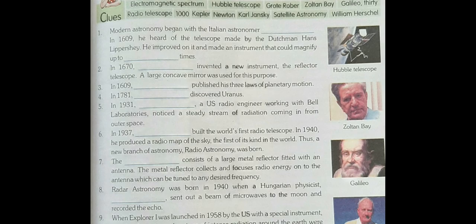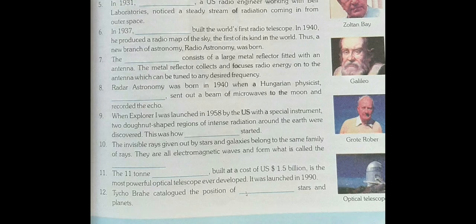Then come to question number 10. The invisible rays given out by stars and galaxies belong to the same family of rays. They are all electromagnetic waves and form what is called the electromagnetic spectrum. Question number 11: the 11-ton Hubble telescope, built at a cost of US $1.5 billion, is the most powerful optical telescope ever developed. It was launched in 1990.